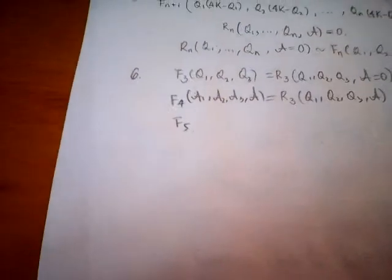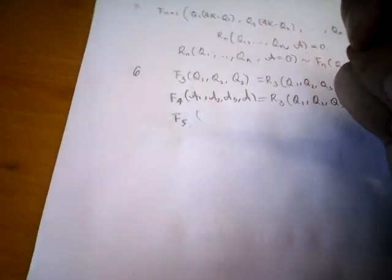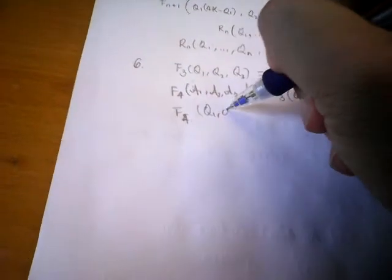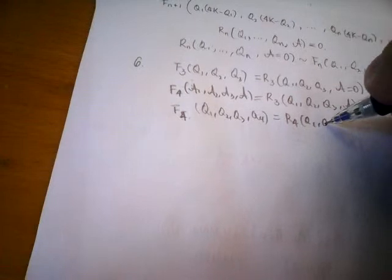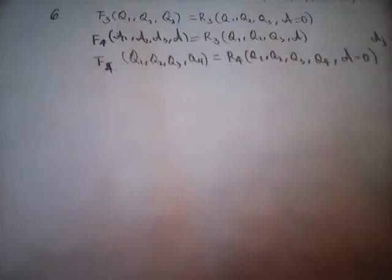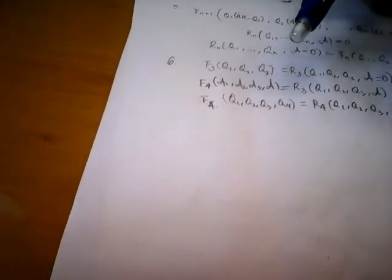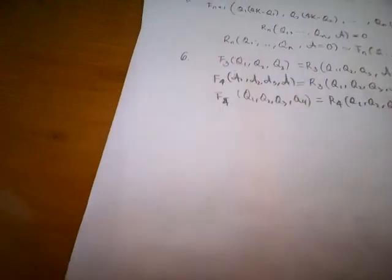What is f5? f4(q1, q2, q3, q4) would relate to some expression of q1, q2, q3, q4, with the quadrilla of them being zero. So this is f3. I now understand why this works.